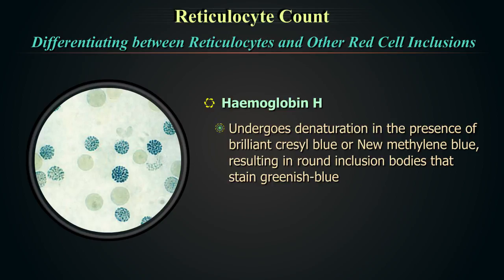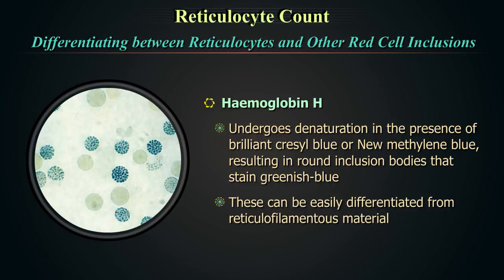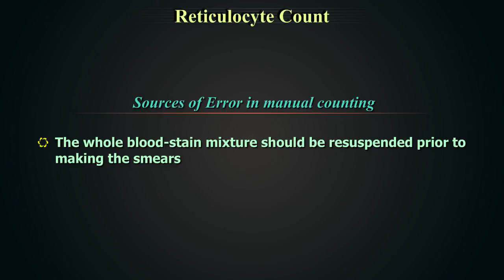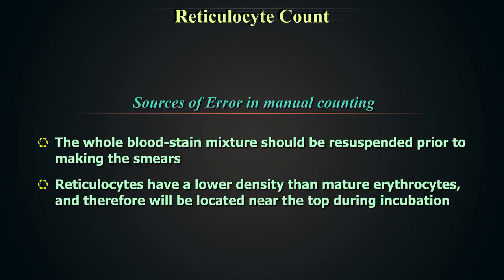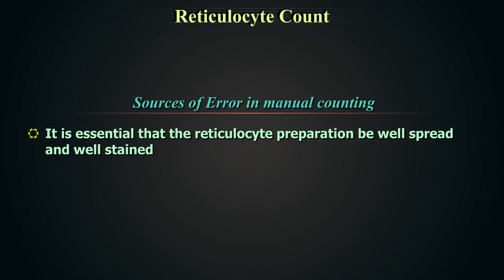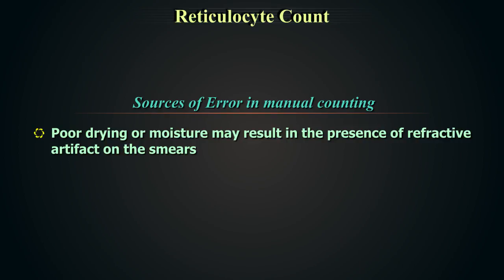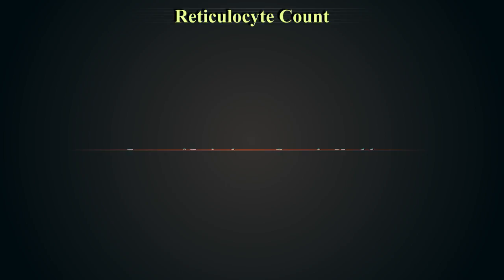Hemoglobin H undergoes denaturation in the presence of brilliant chrysal blue or new methylene blue, resulting in round inclusion bodies that stain greenish blue, easily differentiated from reticulofilamentous material. Heinz bodies are also stained by new methylene blue but stain a lighter shade of blue than reticulofilamentous material, and stain well with methyl violet. The whole blood-stain mixture should be resuspended prior to making smears, as reticulocytes have lower density than mature erythrocytes and settle near the top during incubation. Poor drying or moisture may result in refractive artifacts that could be confused with precipitated reticulum.